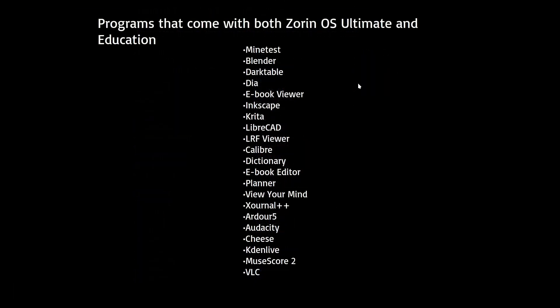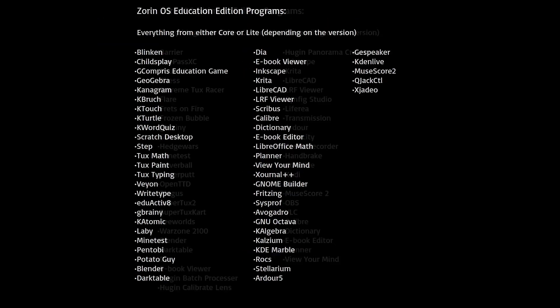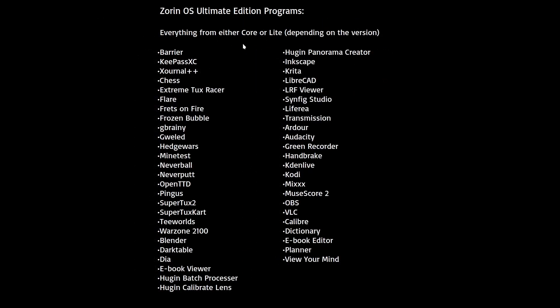All of these programs come with both Ultimate and Education Edition: MindTest, Blender, Darktable, Dia, eBook Viewer, Inkscape, Krita, LibreCAD, RF Viewer, Calibre, Dictionary, eBook Editor, Planner, ViewerMind, Journal, Ardour 5, Audacity, Cheese, KdenLive, MuseScore 2, and VLC. Also, Zorin OS Ultimate and Education come with everything from Core, and Zorin OS Ultimate Lite and Education Lite come with everything from regular Zorin Lite.